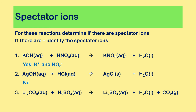The last question: Li₂CO₃(aq) + H₂SO₄(aq) → Li₂SO₄(aq) + H₂O(l) + CO₂(g). Both sides are aqueous or gas — no solid forms, so this is not a precipitation reaction, which means we do have spectator ions. The spectator ions are Li⁺, found in lithium carbonate on the left and lithium sulfate on the right, and SO₄²⁻, found in H₂SO₄ on the left and Li₂SO₄ on the right.